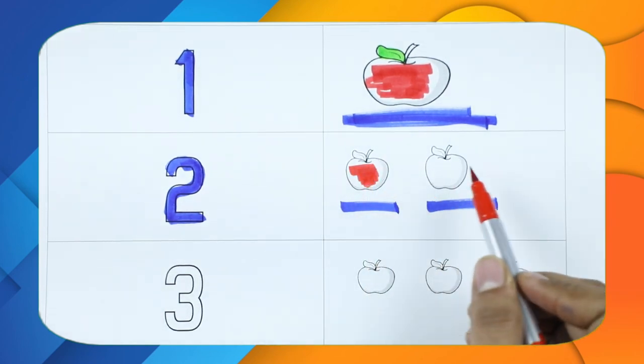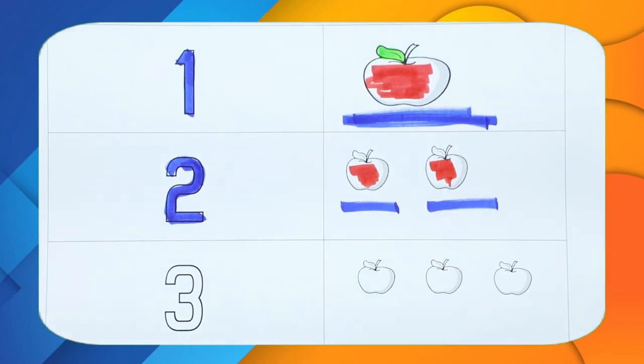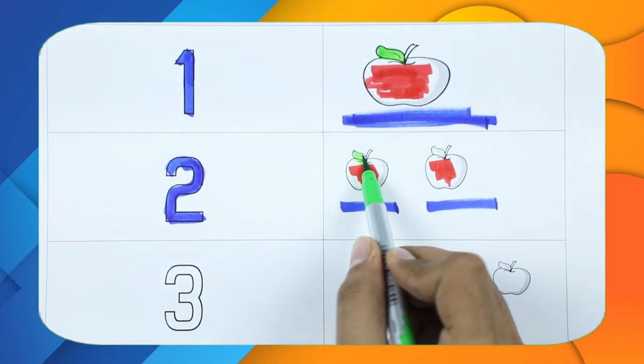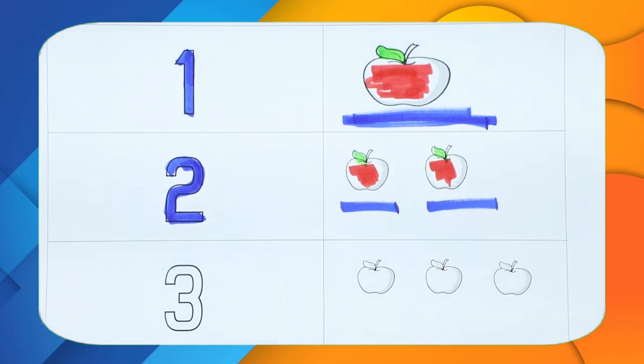Red color, 1 apple. Red color, 2 apples. 1 apple, 1 leaf. 2 leaves, it's apple.